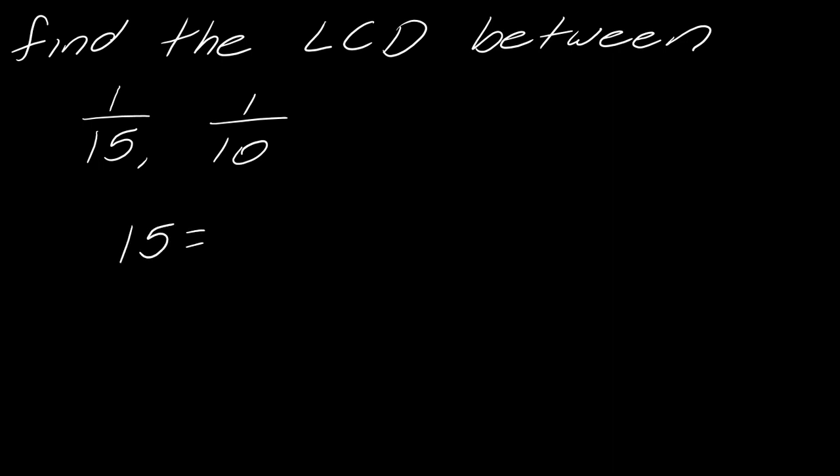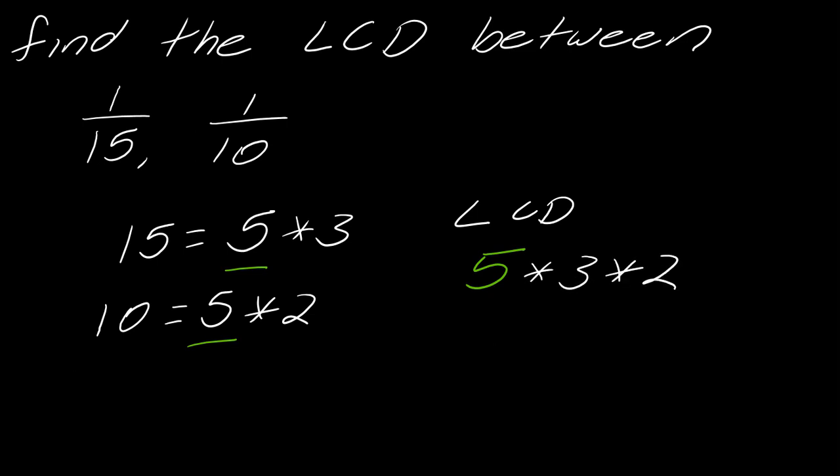So 15 and 10, these are both divisible by 5. So 15 is 5 times 3, 10 is 5 times 2. They both have this 5 in common. When I find my LCD, I'm going to multiply 5 times 3 times 2. This is what they have in common, this is what they don't. So if I multiply those things together, I still get 30.